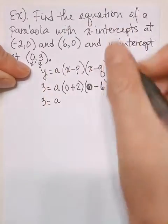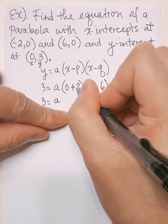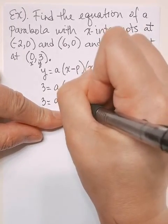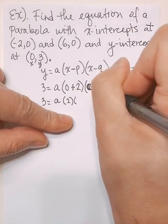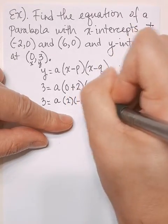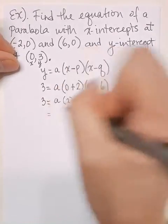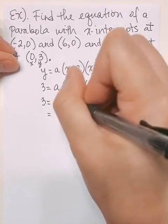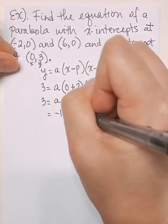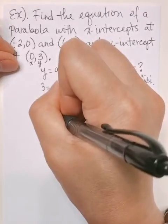3 = a(0 + 2)(0 - 6). So 0 plus 2 is 2, times 2. All of this is multiplication. And then 0 minus 6 is -6. Multiplying 2 times -6 is -12. So we have -12a = 3.